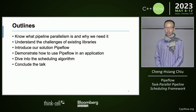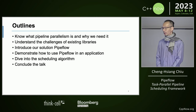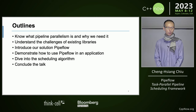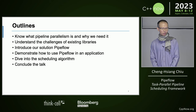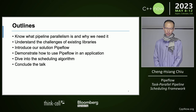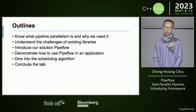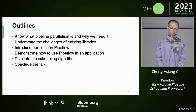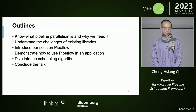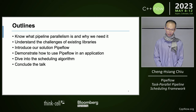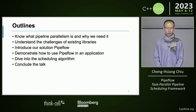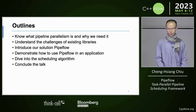This talk covers six parts. First, we'll talk about what pipeline parallelism is and why we need it. Second, we'll talk about the challenges of existing libraries. Third, I will introduce our solution, PyFlow, to address these challenges. Then I will demonstrate how to use PyFlow in a very simple application. Then we'll dive into the scheduling algorithm, and in the end, we'll have a conclusion.